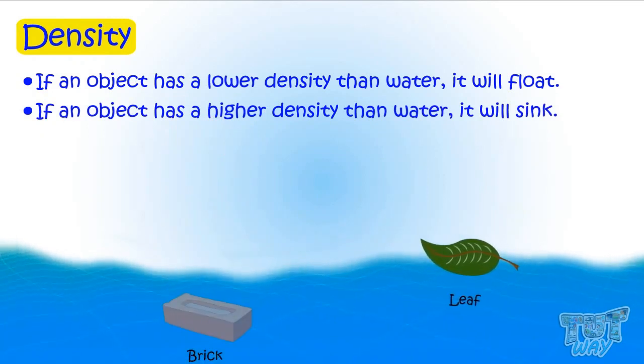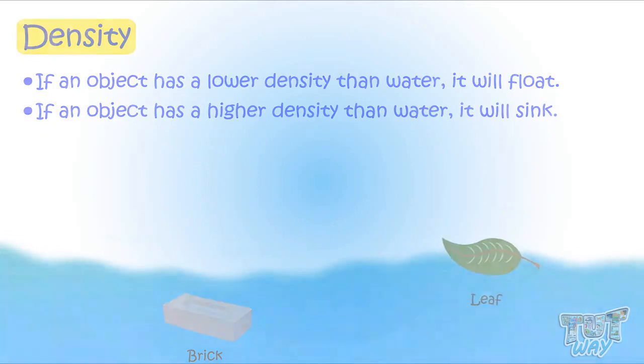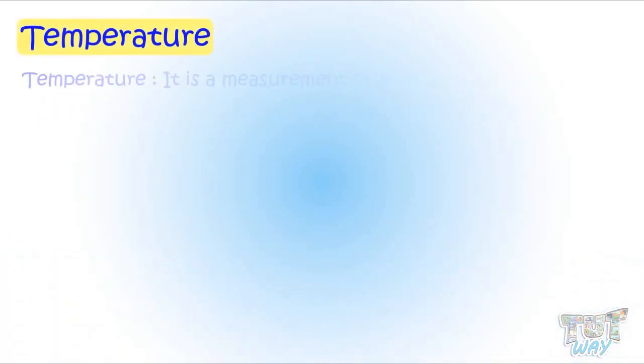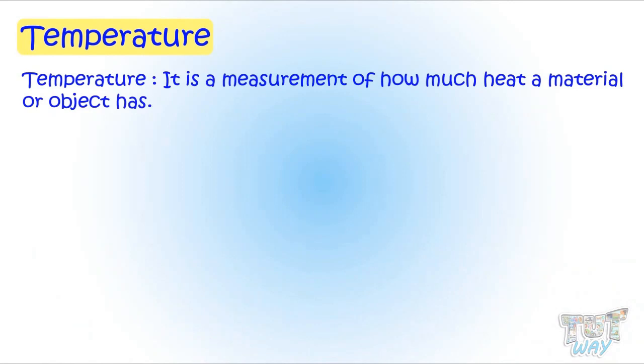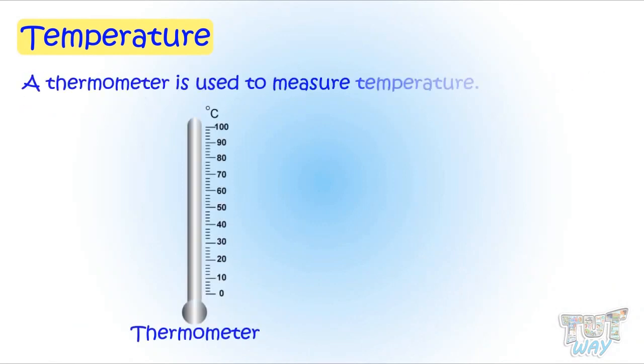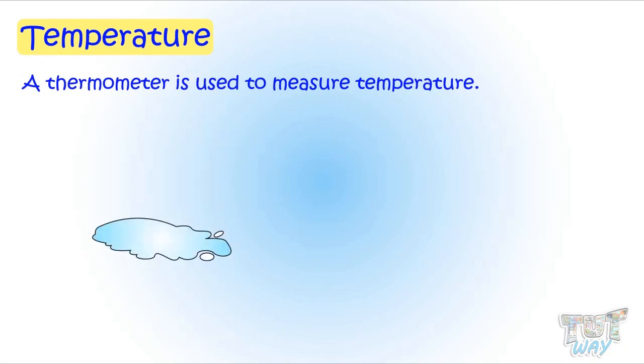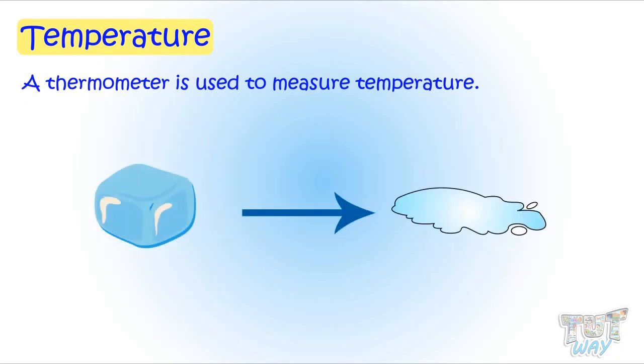Now, let's have another property of matter, and it is temperature. Temperature is a measurement of how much heat a material or object has. A thermometer is used to measure temperature. In science, when water has changed the state from liquid to solid, it is described as the freezing point. When water has changed state from solid to liquid, it is described as melting point.